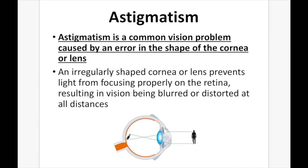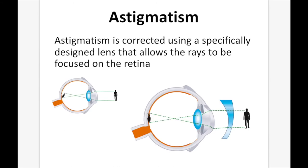Astigmatism is a common vision problem caused by an error in the shape of the cornea or lens. An irregularly shaped cornea or lens prevents light from focusing properly on the retina, resulting in blurred or distorted vision at all distances. Astigmatism is corrected using a specifically designed lens — it may be thicker at the top, thinner at the bottom, and medium in the middle — shaped specifically for the individual eye, and can be different between the two lenses.